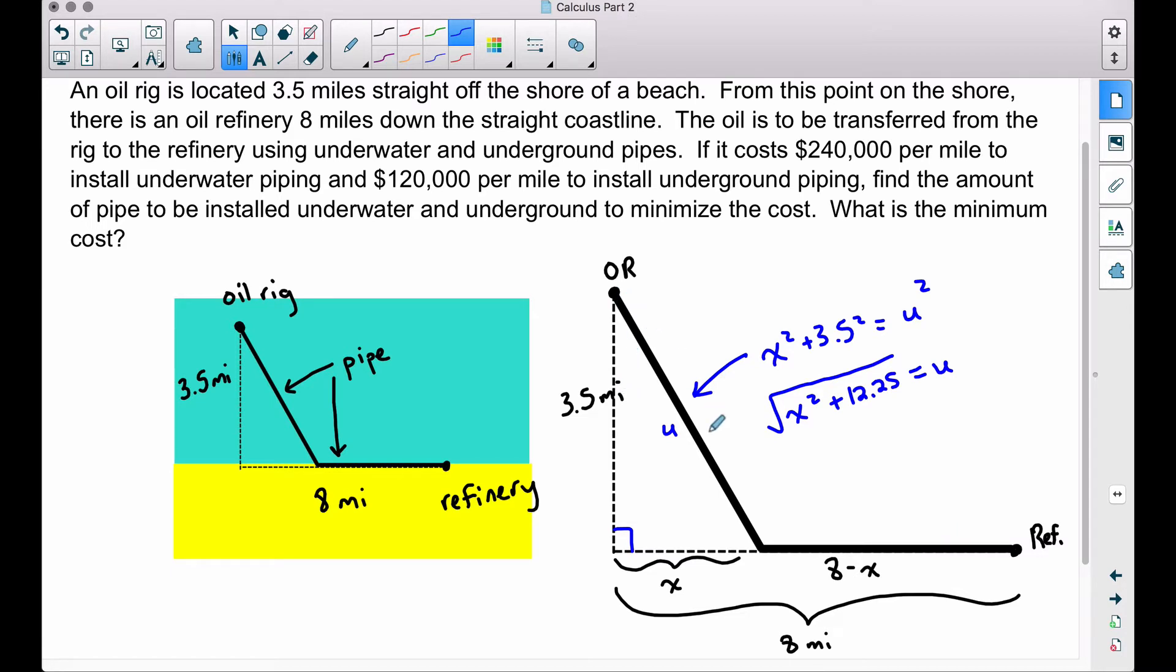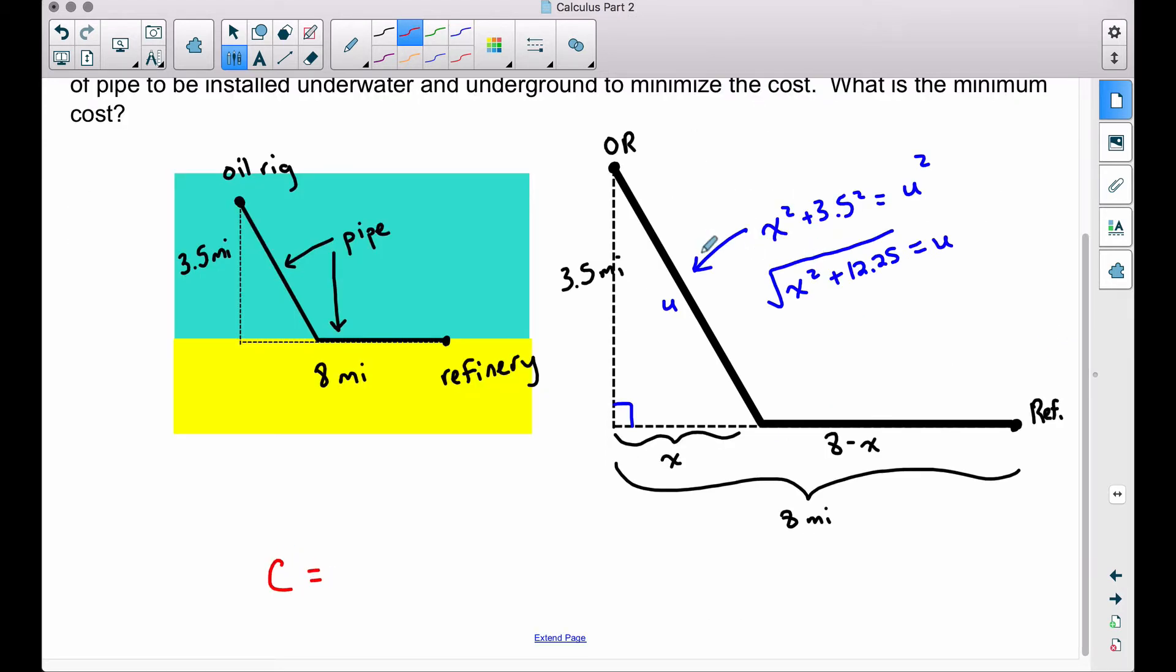What do we know about this u here? For every mile that we have of this underwater pipe, it's going to cost $240,000 per mile. And since everything is in miles, we are in the correct unit of measurement. Let's form a cost function. The cost function is going to be $240,000 per mile times the number of miles of our underwater pipe. That's the length here. Now this is the cost just for the underwater pipe. Then we have the underground pipe here. It's $120,000 per mile times its distance, which is 8 minus x, or its length.